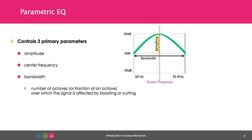Parametric EQs allow users to control three primary parameters: amplitude, center frequency, and bandwidth. You already know what amplitude and frequency are. Bandwidth is the number of octaves or fractions of an octave over which the signal is affected by boosting or cutting.